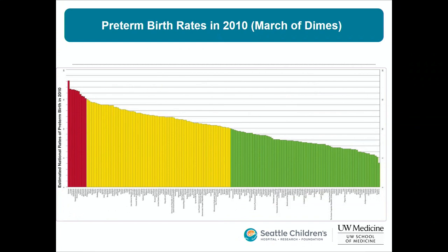To study this question, we needed a location with both the highest rates of preterm birth and high rates of periodontal disease in pregnant people. What is the country with the highest preterm birth rate? It's Malawi — nearly one in five pregnancies results in preterm birth.